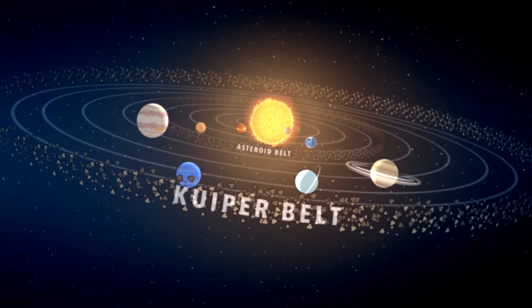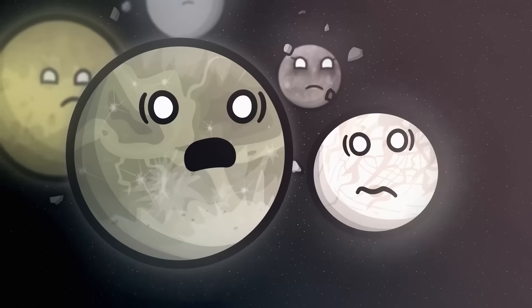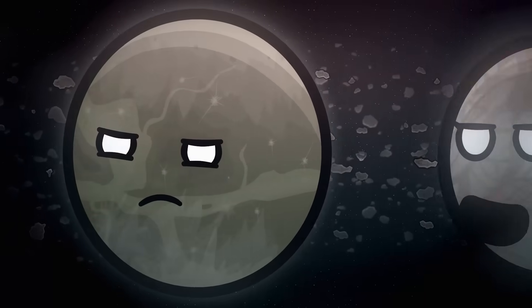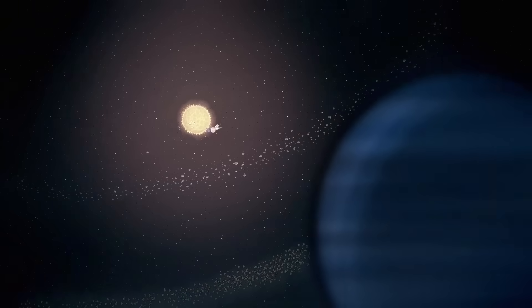Previously on Solar Balls: Ganymede and Europa, two of Jupiter's moons, have been exiled from the solar system after a trial held by the Sun. Now, with nowhere to go, they venture into the darkness of space in search of the mysterious Planet X.